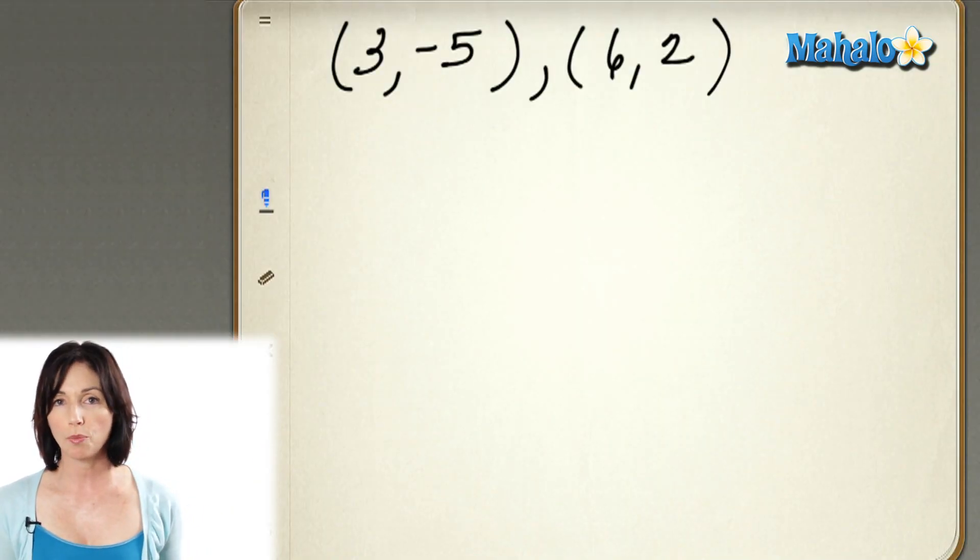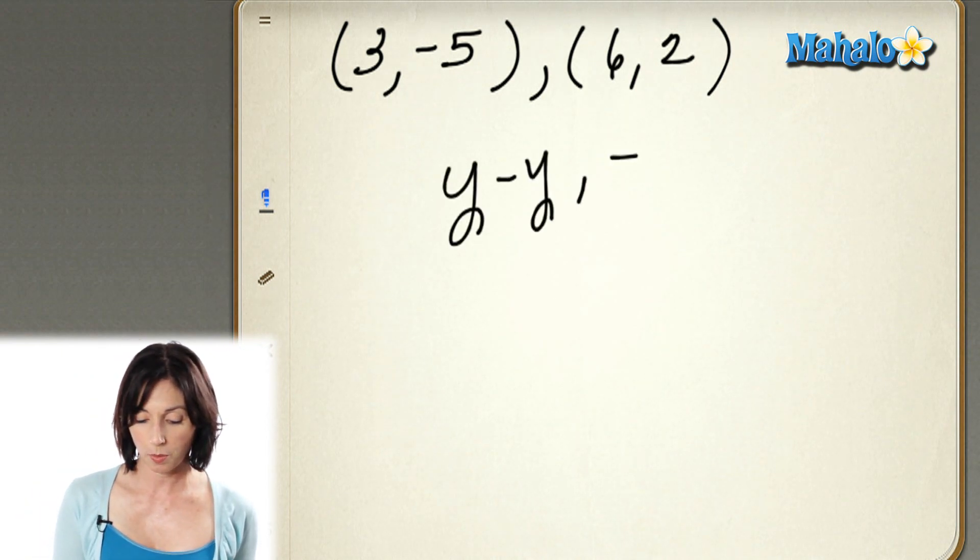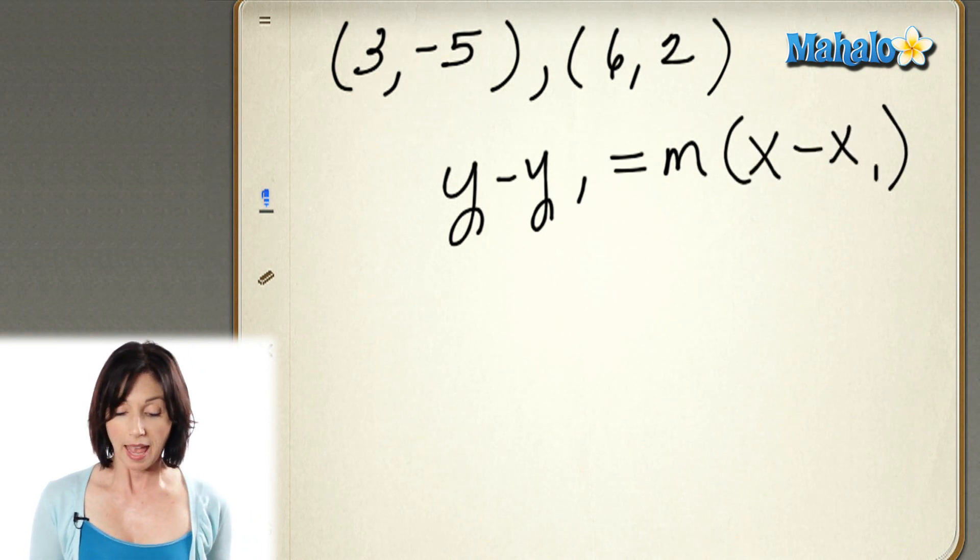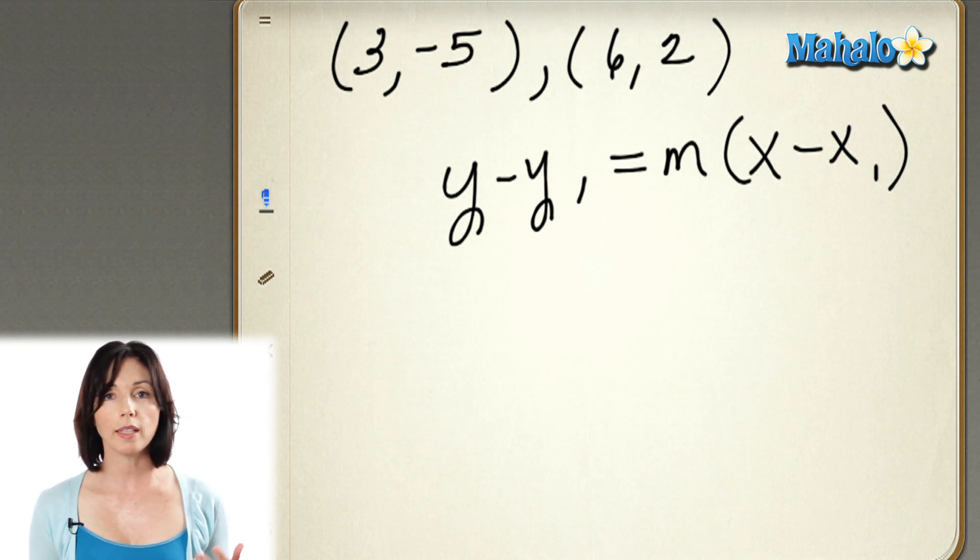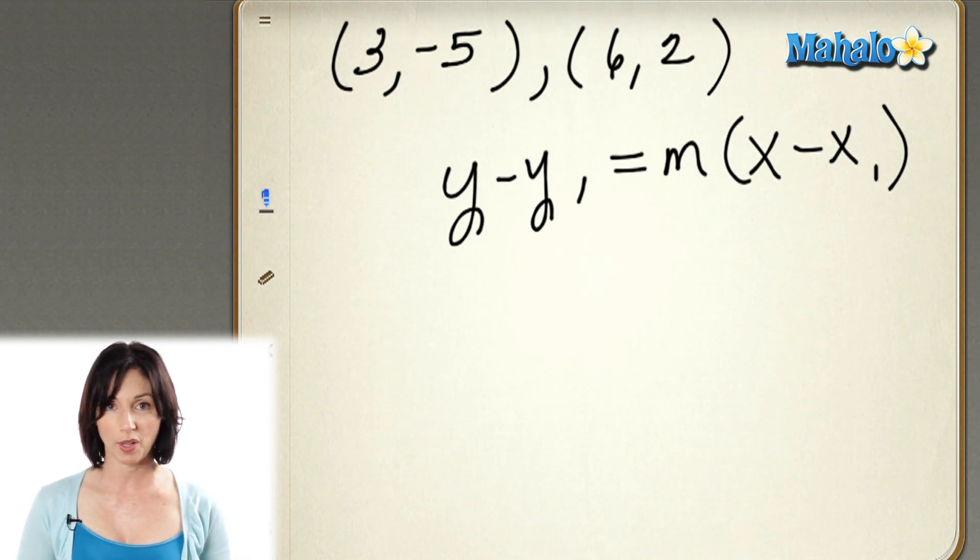Now, point slope form looks like this: y minus y1 equals m times x minus x1. Now, in this equation, m is the slope. x1 and y1 are specific x and y coordinates. And x and y are my variables, my independent and my dependent variables.